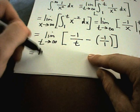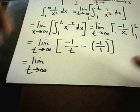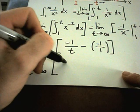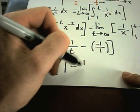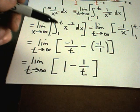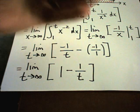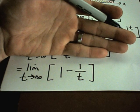So I can rewrite this as the limit as t goes to infinity. I'm going to write the positive one first, then I've got minus one over t left over. And now that I've plugged my upper and lower limits in, I've kind of cleaned it up a little bit, now I'm just back to a good old limit problem.